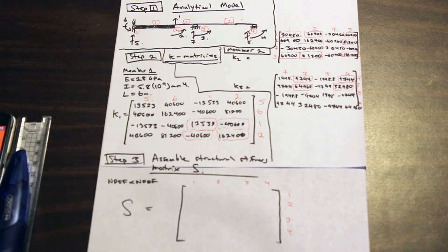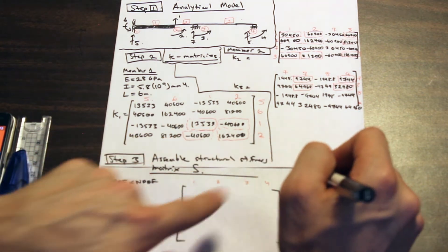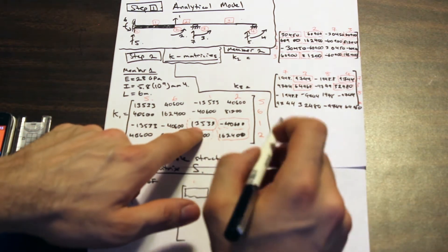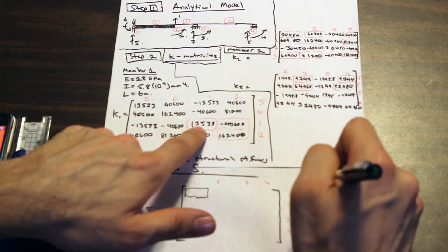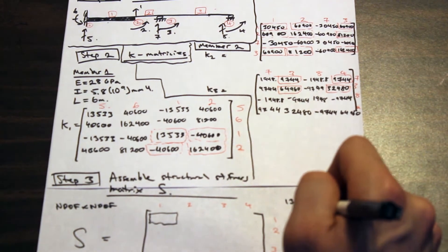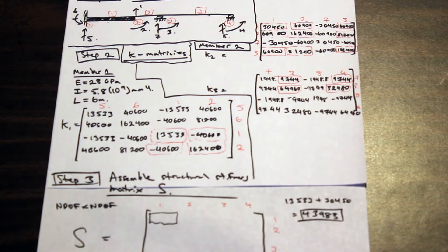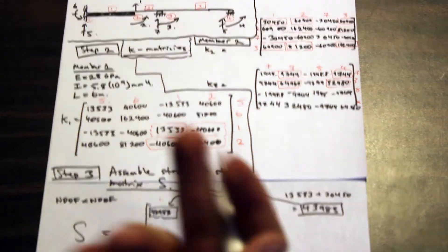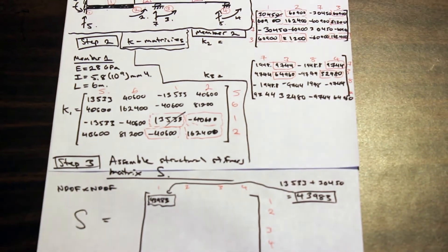Let's do the first entry, position (1,1). I'll do the rough work over here so I don't fill up my matrix. We add up all the (1,1) entries across all the K matrices: 13,533 plus 30,450 — that gives us 43,983. So 43,983 is the number that goes into the (1,1) position of the S matrix. It's as simple as that.